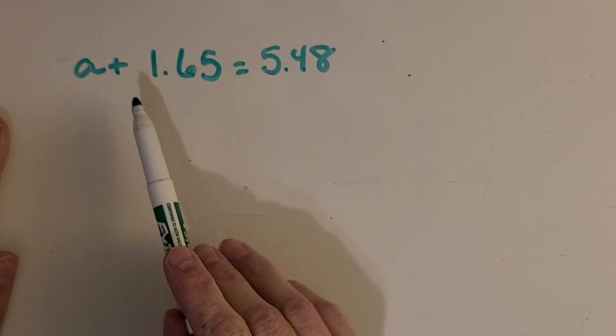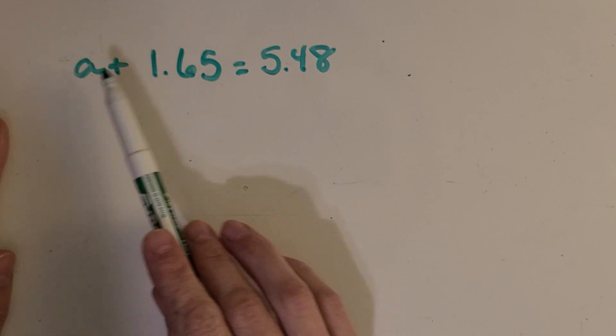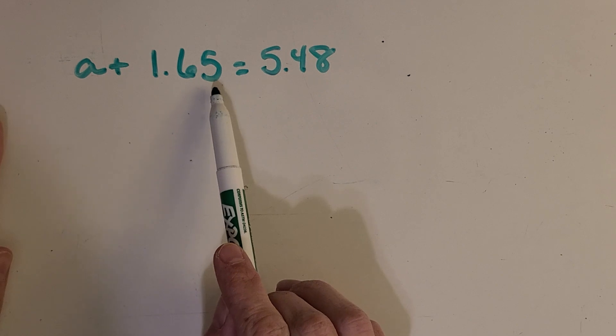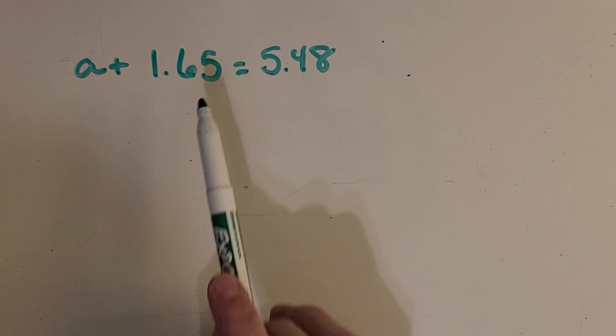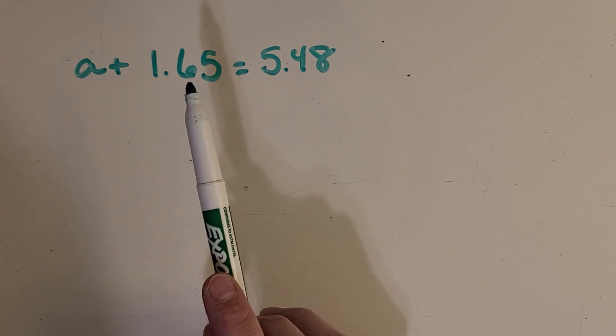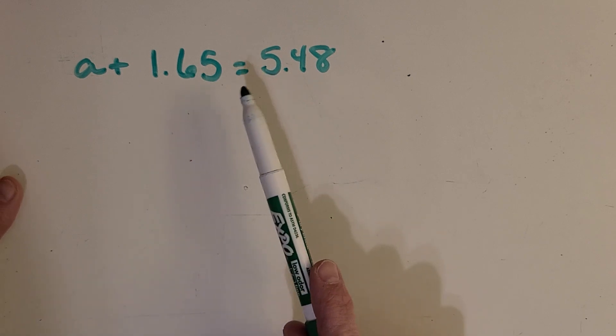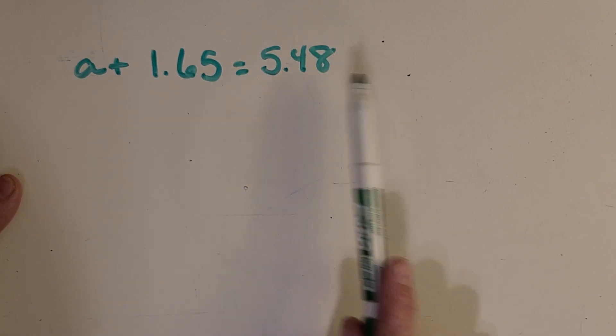So here's our first example. So I've got A plus 1.65. So I'm bringing some decimals in this time. If you want to go back and watch my first video about solving equations, then that might set you up for this one. And it equals 5.48.